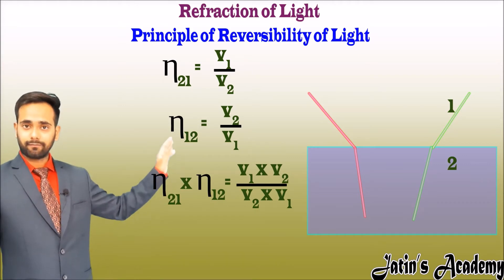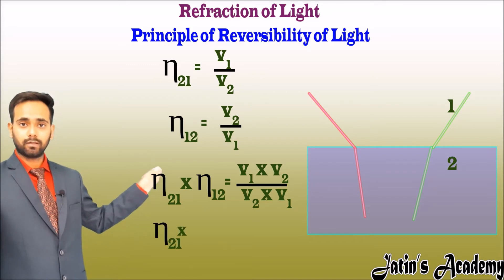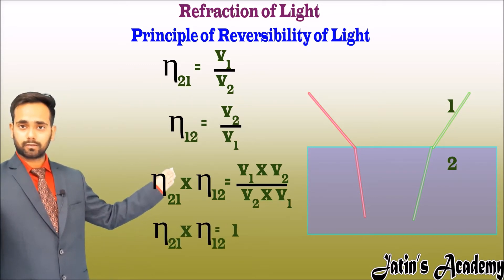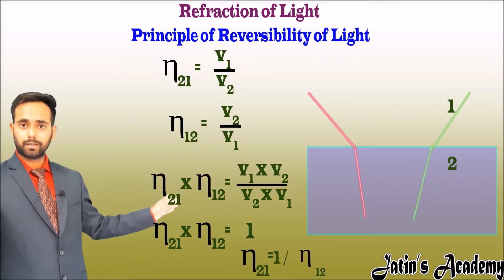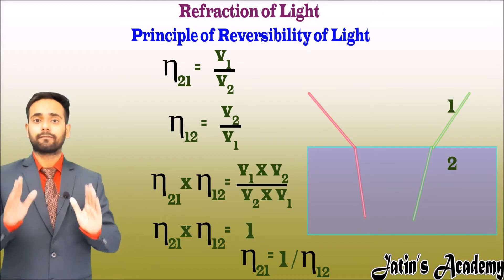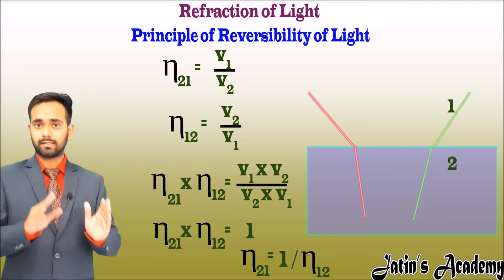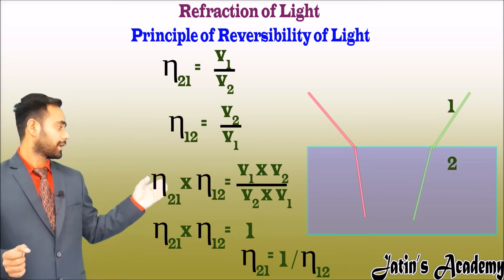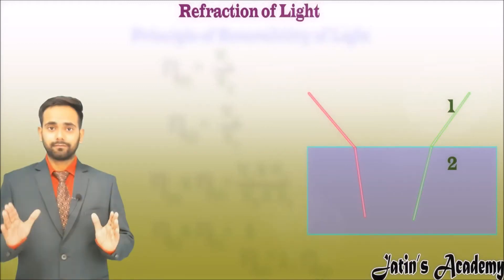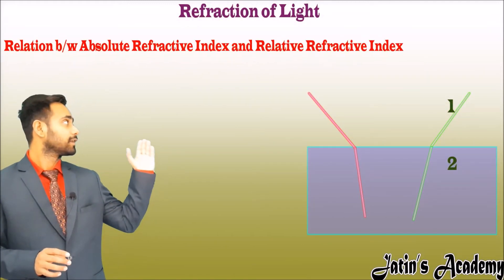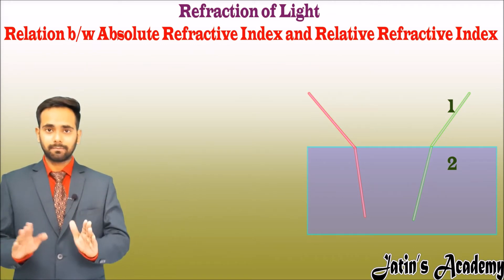On the right side, everything cancels and we get n21 × n12 = 1, which means n21 = 1/n12. This shows that the refractive index of medium 2 with respect to medium 1 is the reciprocal of the refractive index of medium 1 with respect to medium 2.